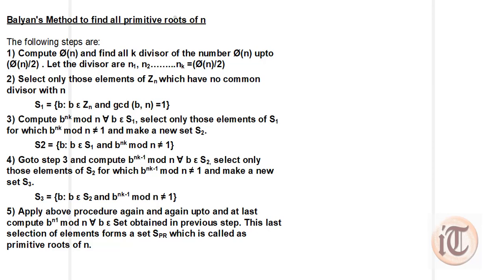The first step says that we have to calculate phi of n. Phi of n is the Euler-Totient function. After that we take all the k divisors of phi(n), up to phi(n)/2, and those divisors are represented as n1, n2, up to nk which equals phi(n)/2.